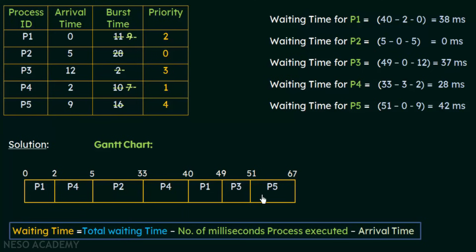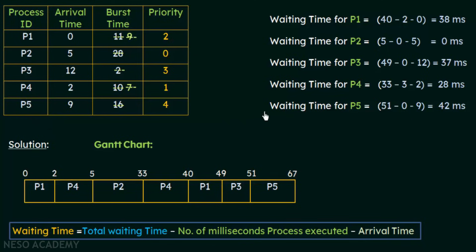For P3, the last occurrence is at 49ms, P3 never executed before, and its arrival time is 12. Waiting time for P3 = 49 − 0 − 12 = 37 milliseconds. For P4, the last occurrence is at 33ms, it previously executed for 3 milliseconds (from 2 to 5ms), and its arrival time is 2. Waiting time for P4 = 33 − 3 − 2 = 28 milliseconds.